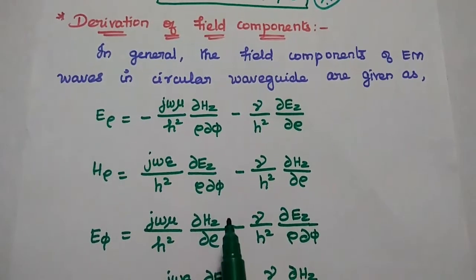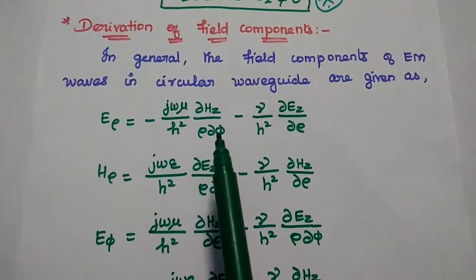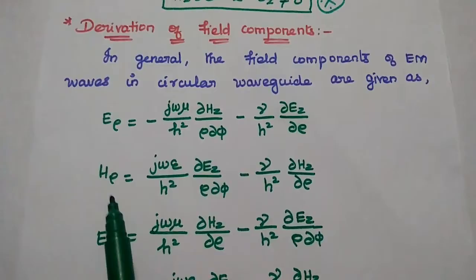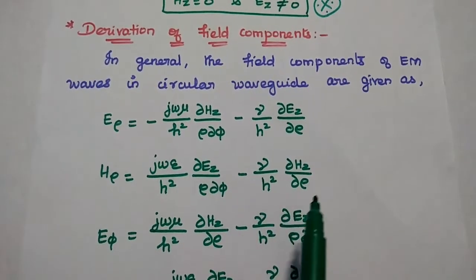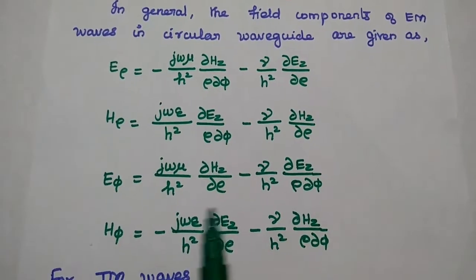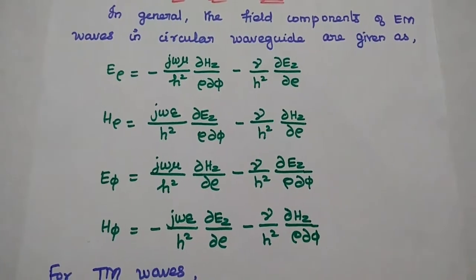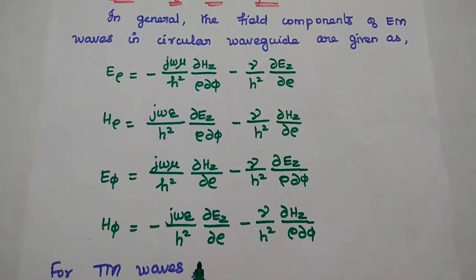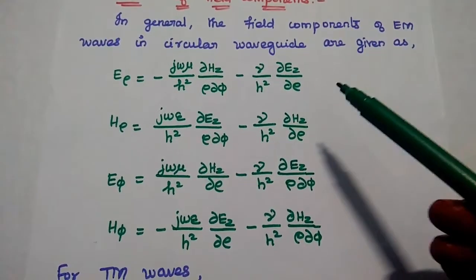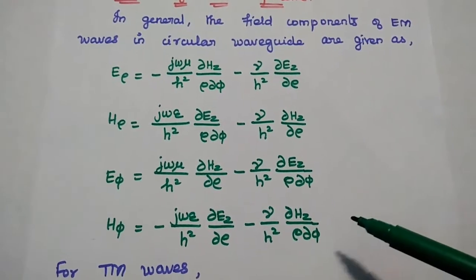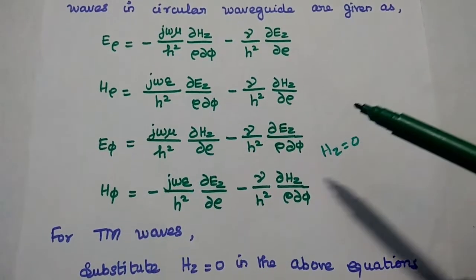These are the field components of electromagnetic waves in circular wave guide. E rho is equal to J omega mu by H square, dou HZ by rho dou phi, minus gamma by H square dou EZ by dou rho. E phi is equal to J omega mu by H square dou HZ by dou rho minus gamma by H square dou EZ by rho dou phi. For TEM waves, we are going to substitute HZ equal to zero in these four equations to get the TEM field components.